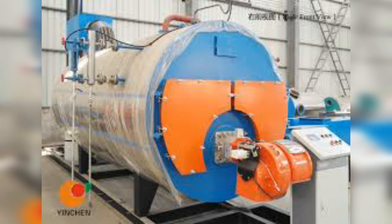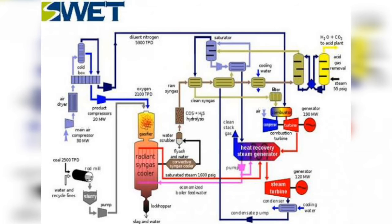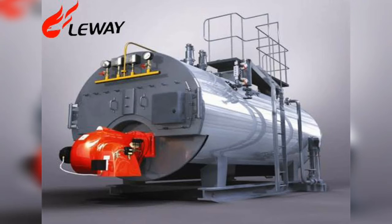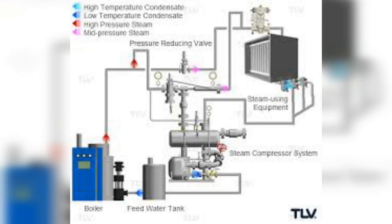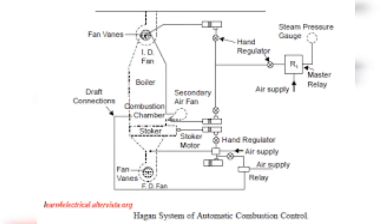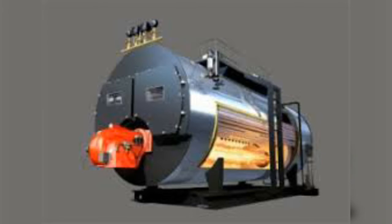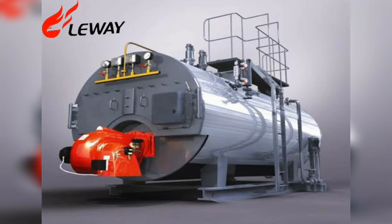The system of automatic combustion control is shown. The master relay R1 is sensitive to small variations in steam pressure and is connected to the steam pressure gauges. A fall in pressure operates the master relay R1, which in turn operates a servo motor coupled to the vanes of the induced draught fan, opening it slightly.